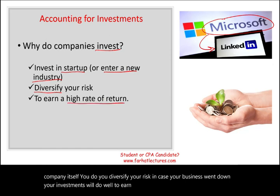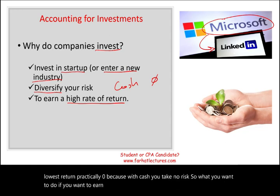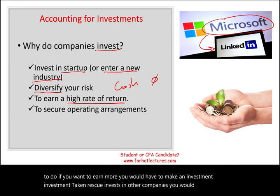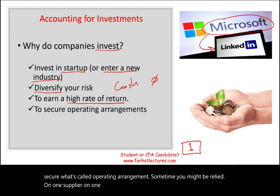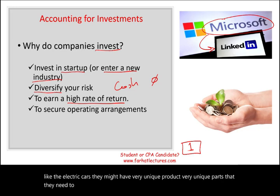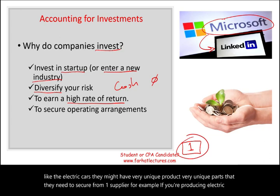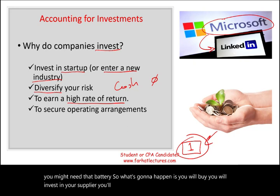Another reason is to earn a high rate of return. Cash gives you the lowest return — practically zero — because with cash you take no risk. So if you want to earn more, you have to make an investment. Companies also invest to secure what's called an operating arrangement. Sometimes you might rely on one important supplier. For example, in specialized industries like electric cars, they might have very unique parts to secure from one supplier. If you're producing an electric car, you might need that battery, so you will invest in your supplier — buy some of their stocks and become an owner.